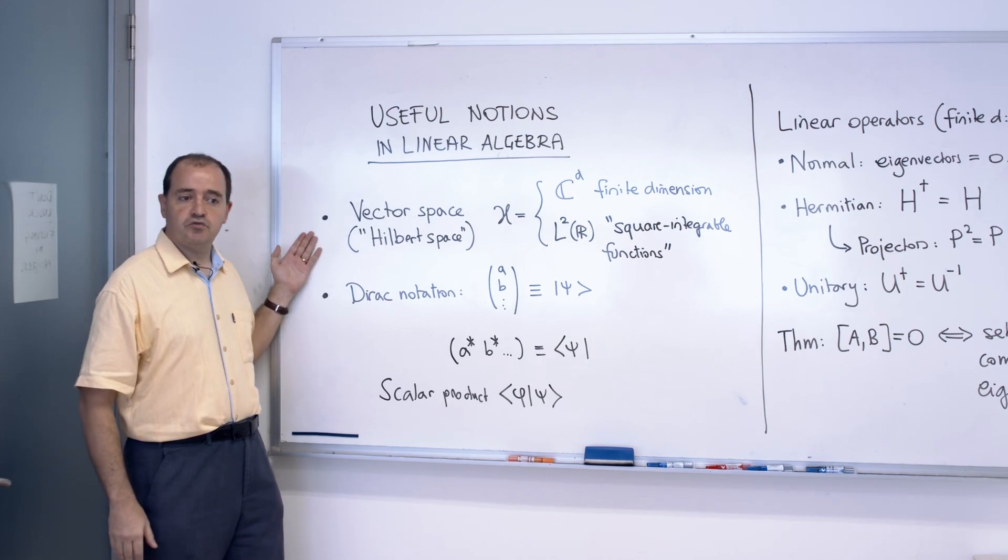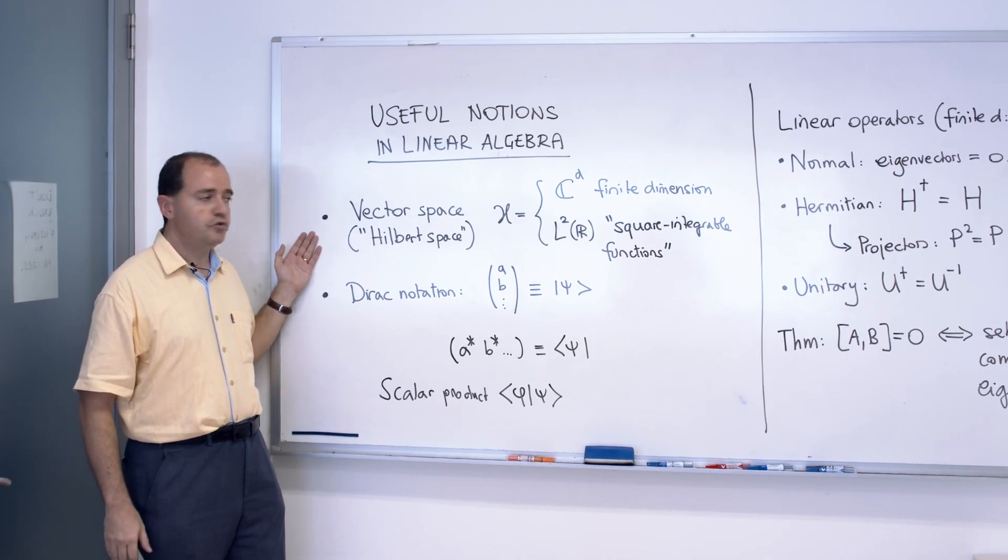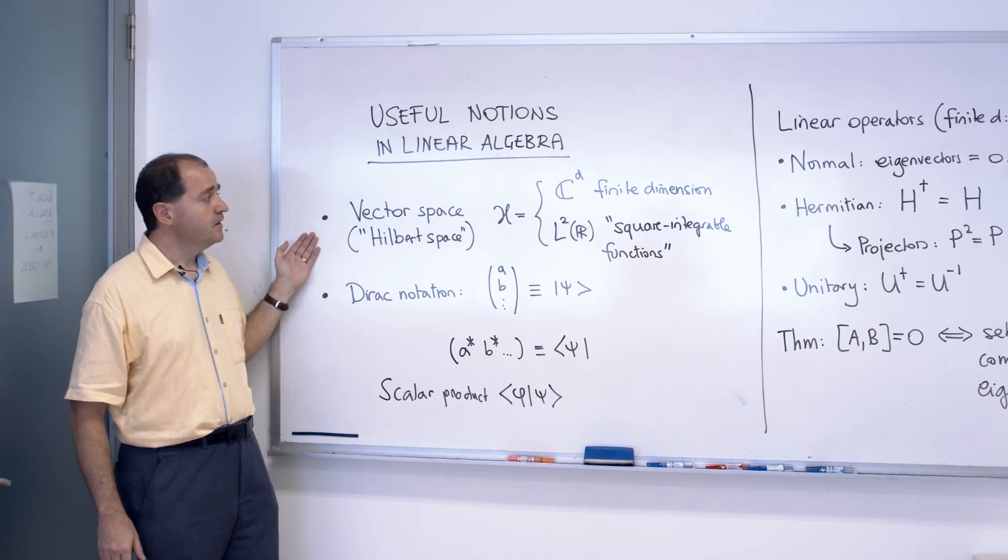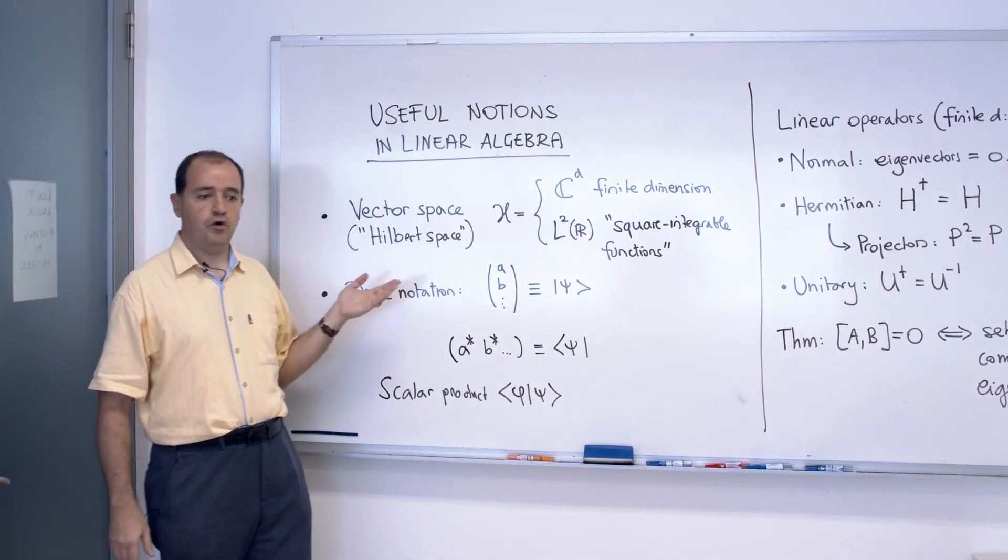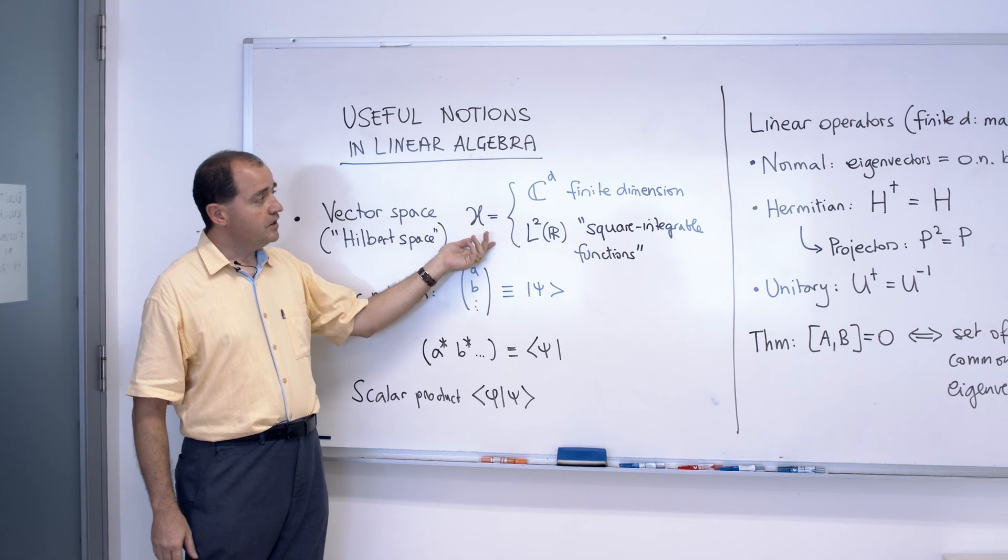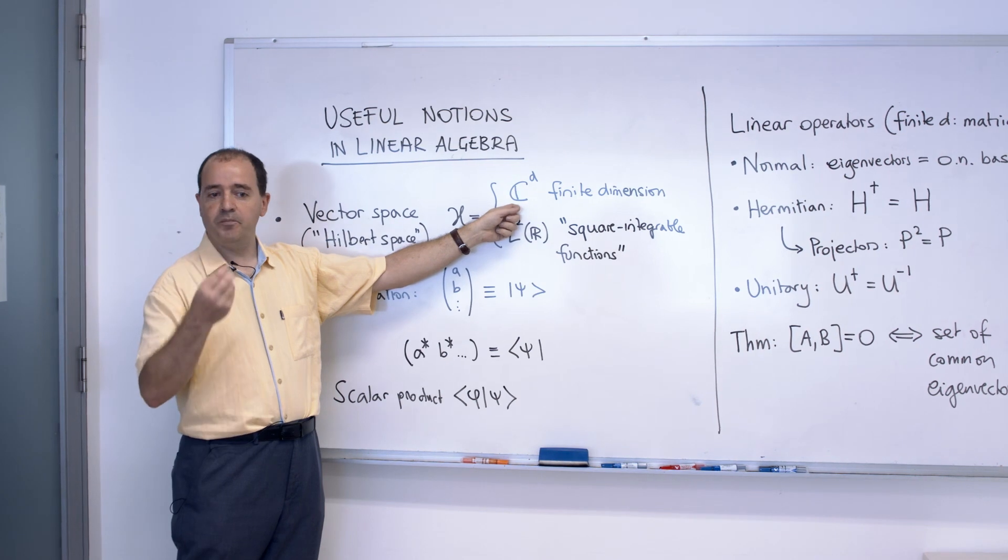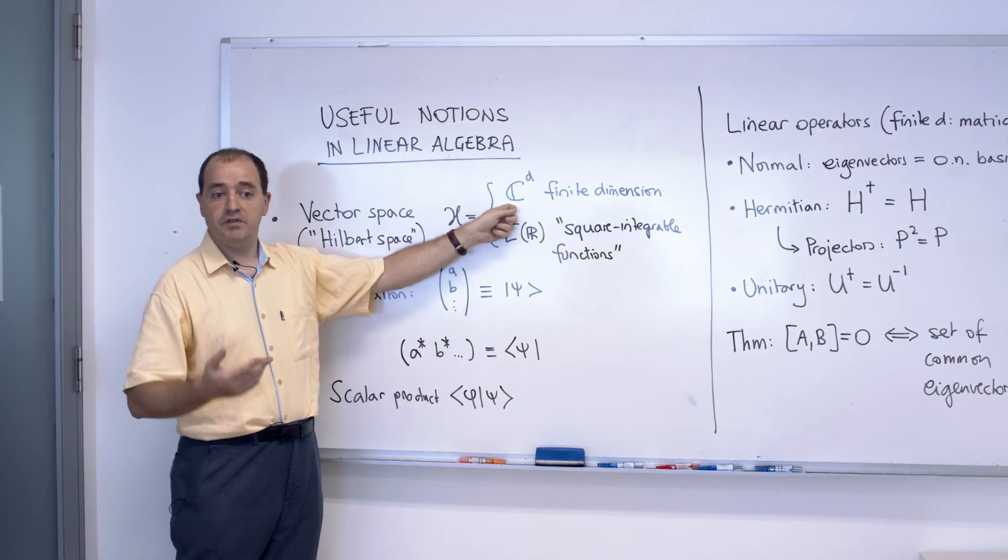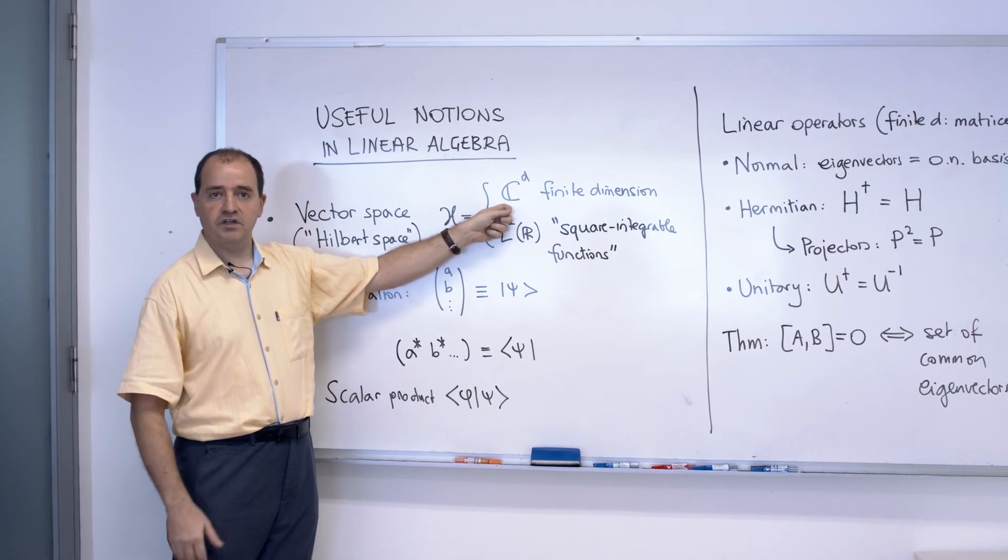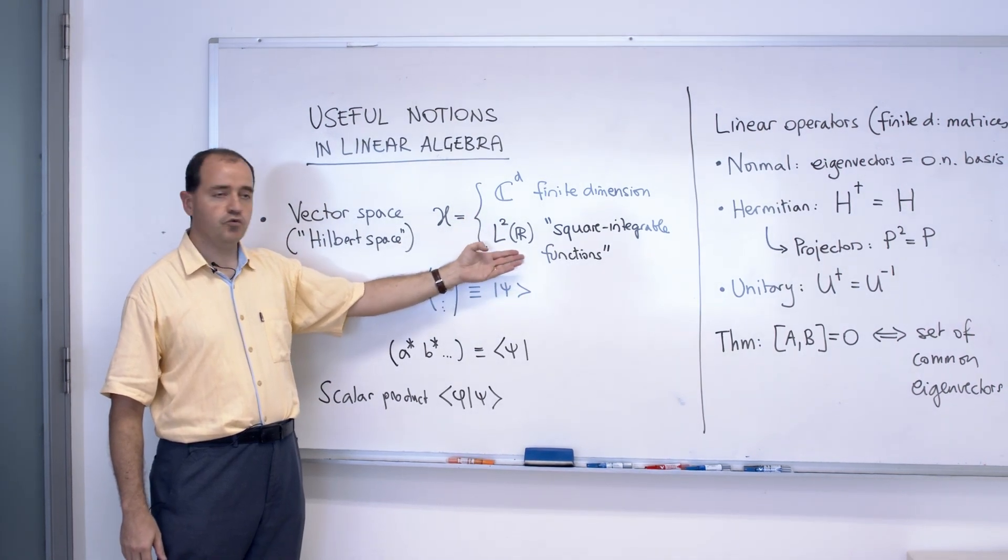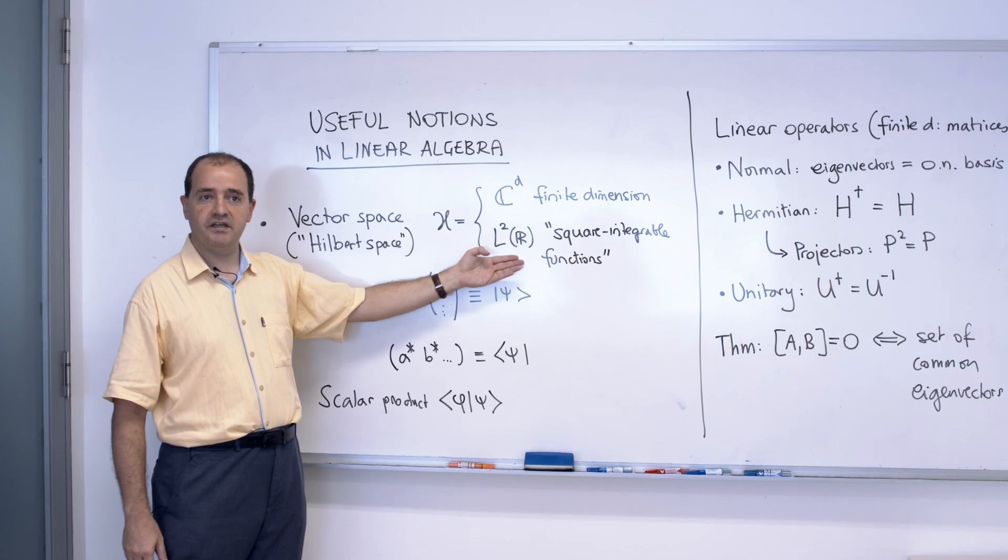The first thing to define is, of course, what is the vector space that we are going to use. In quantum theory it is called, for some reason, the Hilbert space. There are essentially two types of vector space we are going to use. Finite dimensional ones, which are essentially the vectors with d complex components. d can be 2, 3, 4, up to as many as you want. Or an infinite dimensional one that is called the space of square integrable functions that will be defined later.